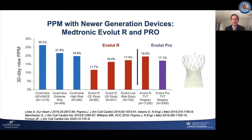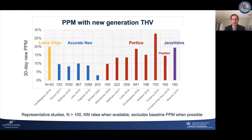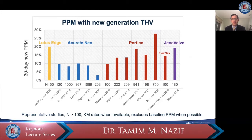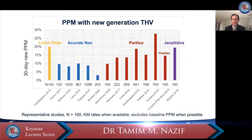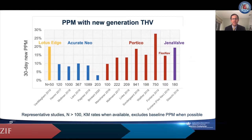There have also been changes over time with the self-expanding system. Data from the regulatory trials and the TVT registry show that with the introduction of the newer generation Evolute-R and Pro valves, there has been a meaningful decrease in permanent pacemaker implantation rates to about 11 to 20%. We see rates somewhat lower with the Acurate Neo, less than 10%, and somewhat higher, from 10 to about 20%, with the Lotus Edge and Portico valve. Even with these newer generation systems, this remains a persistent problem.